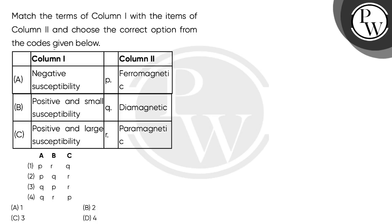Let's read the question. Match the terms of column 1 with the items of column 2 and choose the correct option from the codes given below. In column 1 we have the susceptibility of some magnetic substances, and in column 2 we have the names of those magnetic substances to match the correct entries.